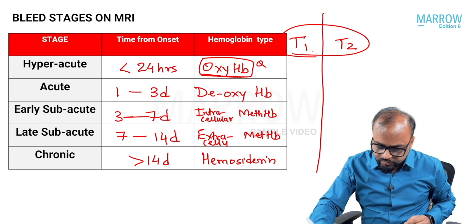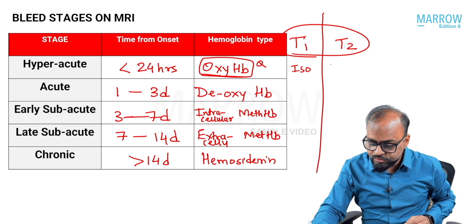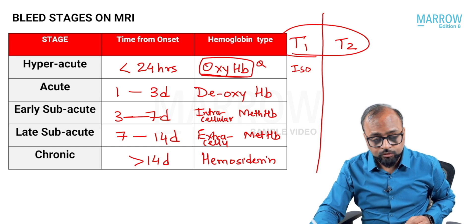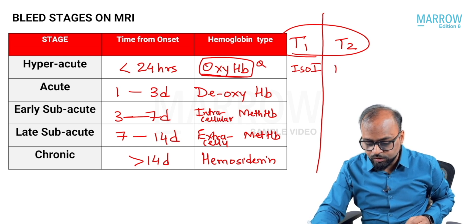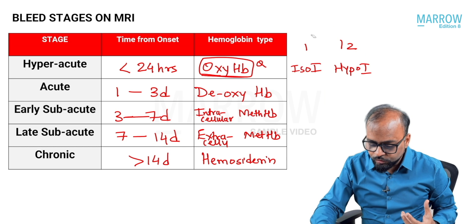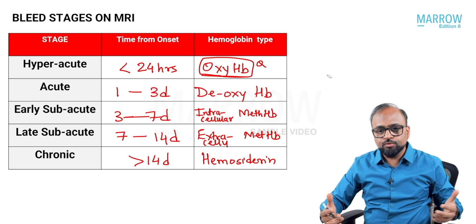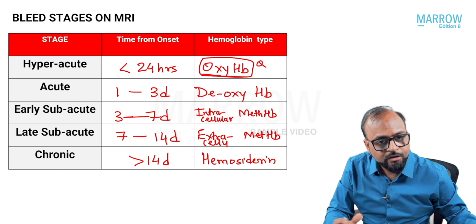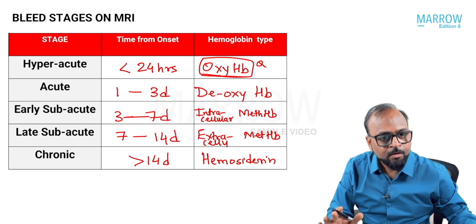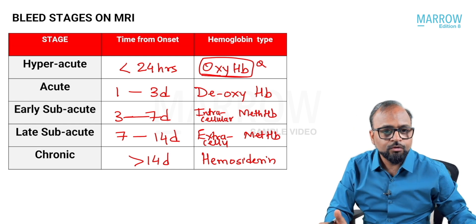On T1, a hyperacute bleed will appear iso-intense; on T2 it will appear hypo-intense. But this table has become a nightmare already, so if we add more information it will be very difficult to remember. We are not going to do that.